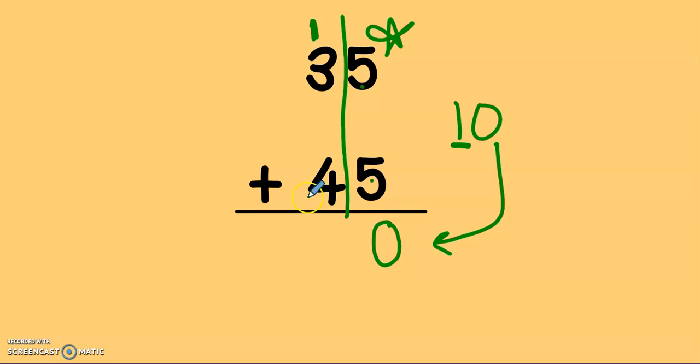Now, I have 4 plus 3 plus 1. So, I have 4, 5, 6, 7, 8. Don't forget to add that new 10. 35 plus 45 is equal to 80.